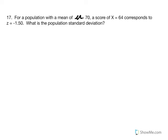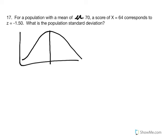Number 17: for a population with a mean of 70, a score of 64 corresponds to a z-score of negative 1.5. What is the population standard deviation? Visually, we have a mean of 70 in the center, and a score of 64 to the left of the mean, which is negative 1.5 standard deviation units below the mean.